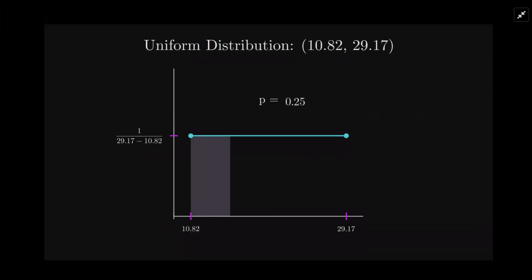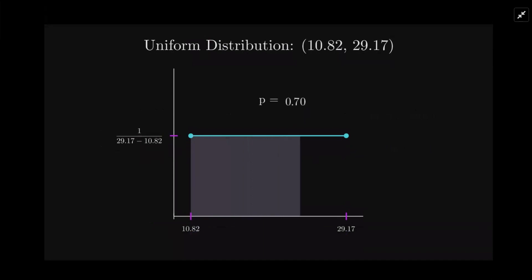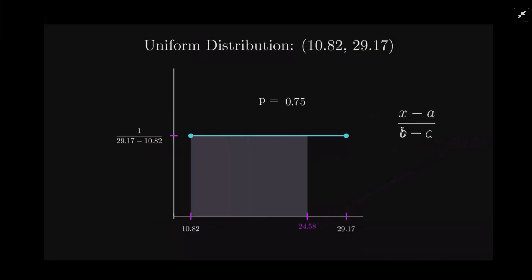The probability is equal to the area. So I'm going to stop it when it hits 75% — that's where 25% are above. We want to find that value, X. The algebra for doing that is fairly simple: A is our starting point, B is our ending point, and we just solve for X, and you will get 24.58.